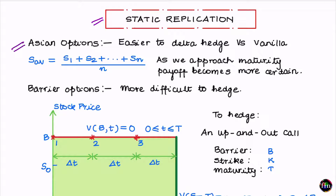When you talk about an exotic option such as the Asian option, remember that it's much easier to delta hedge an Asian option compared to a vanilla option. The reason is that the underlying of an Asian option is the arithmetic average stock price computed using stock prices observed on pre-decided dates during the life of the option. This is what that arithmetic average looks like, assuming I will be averaging on N pre-decided dates.